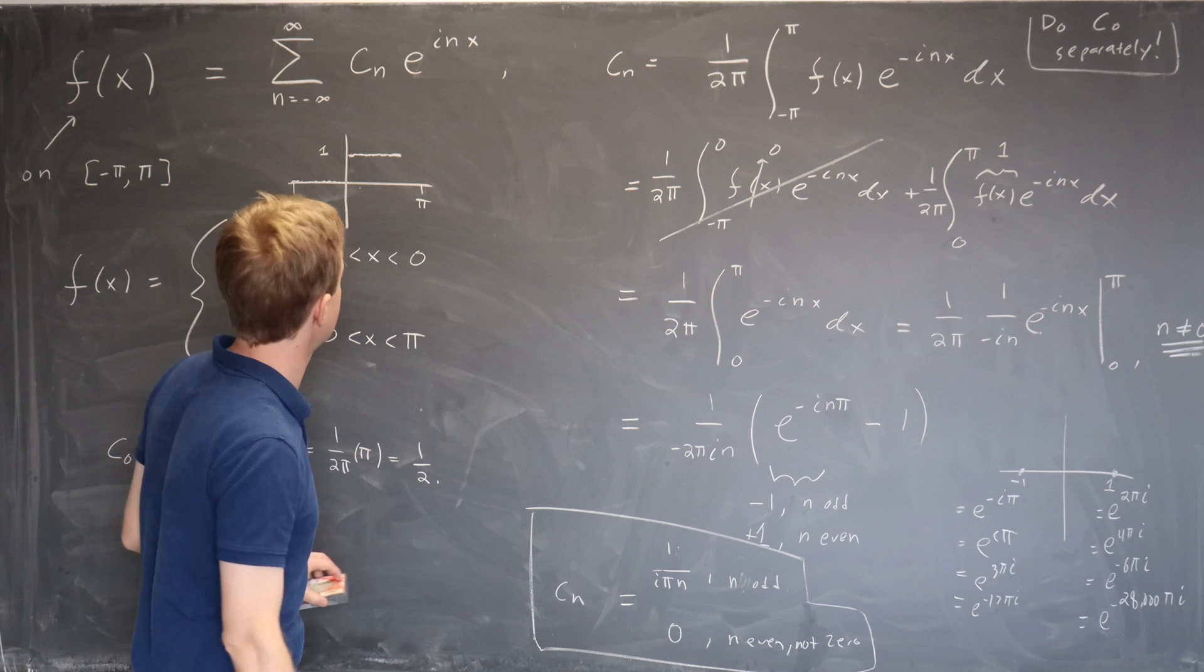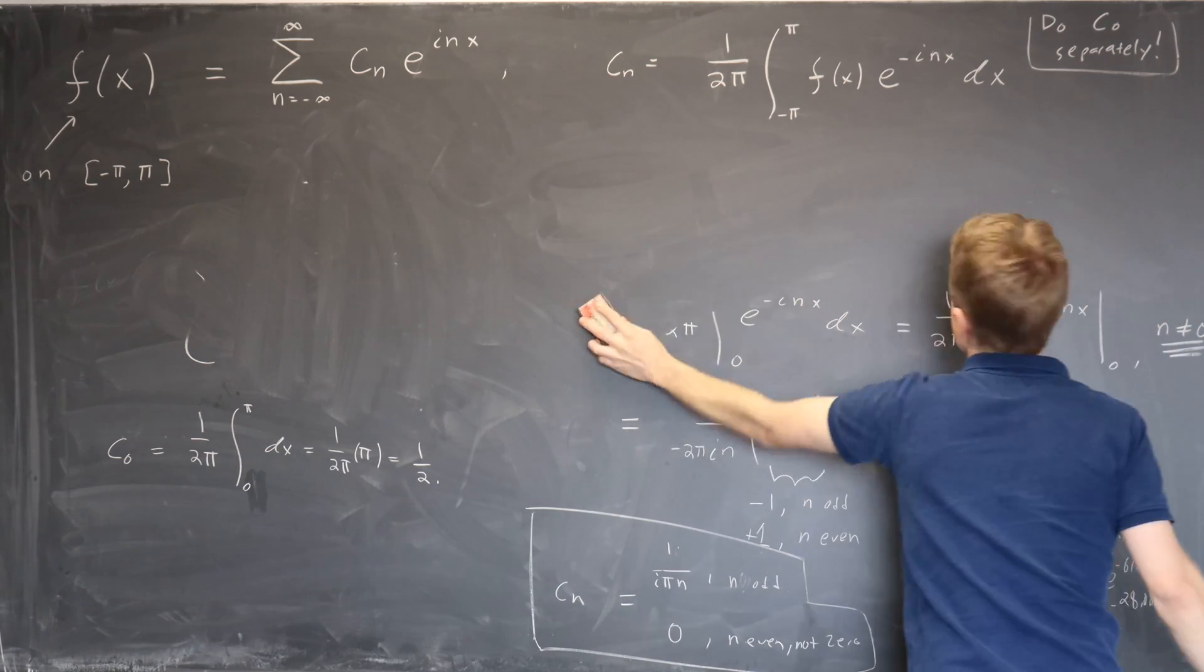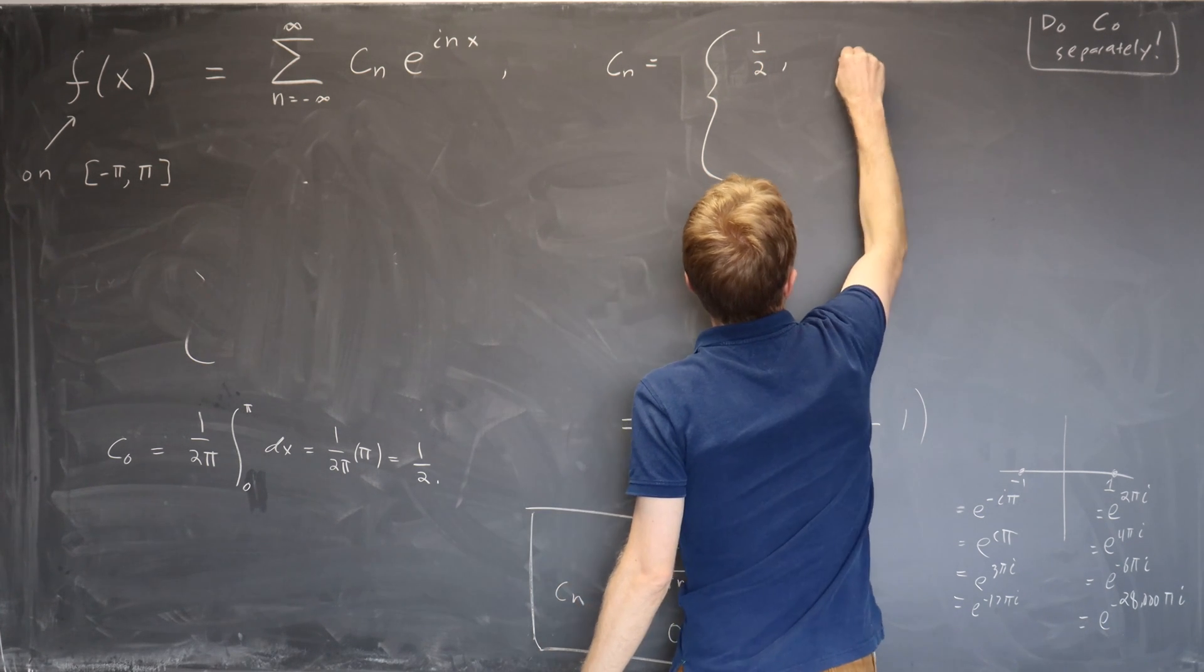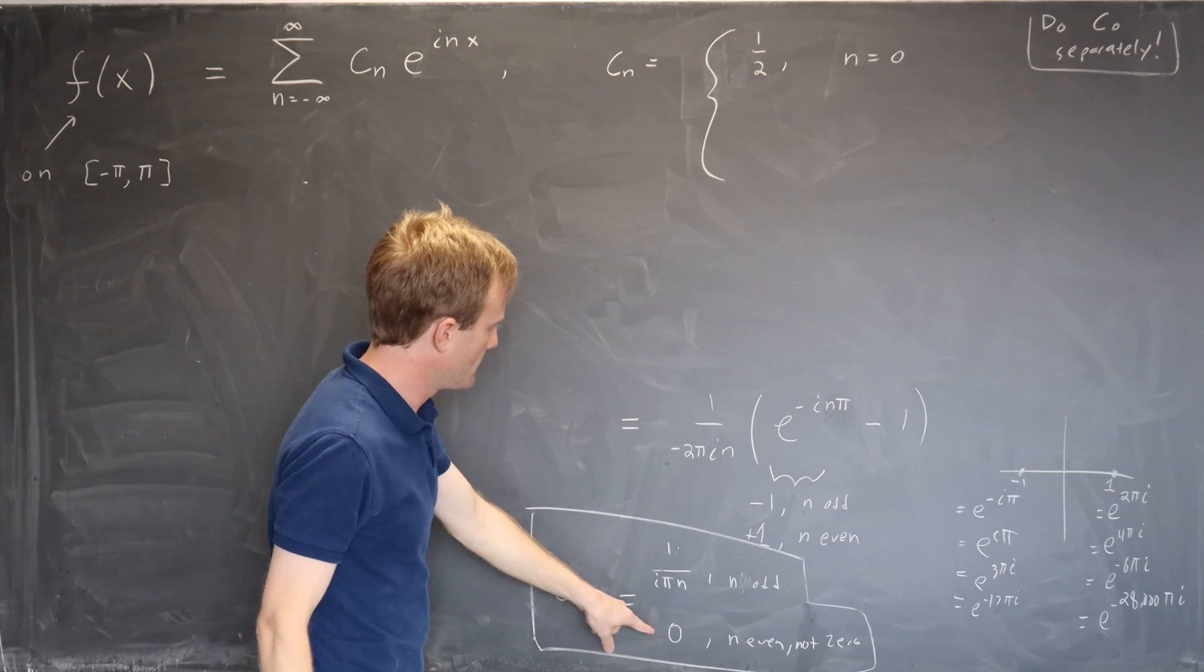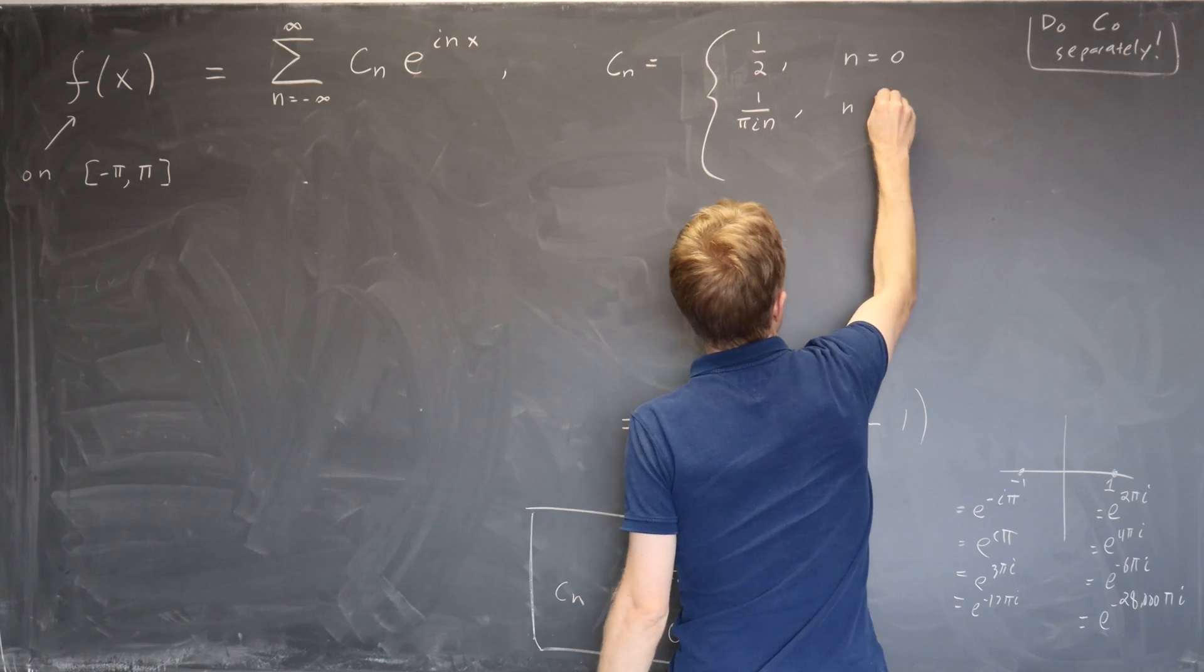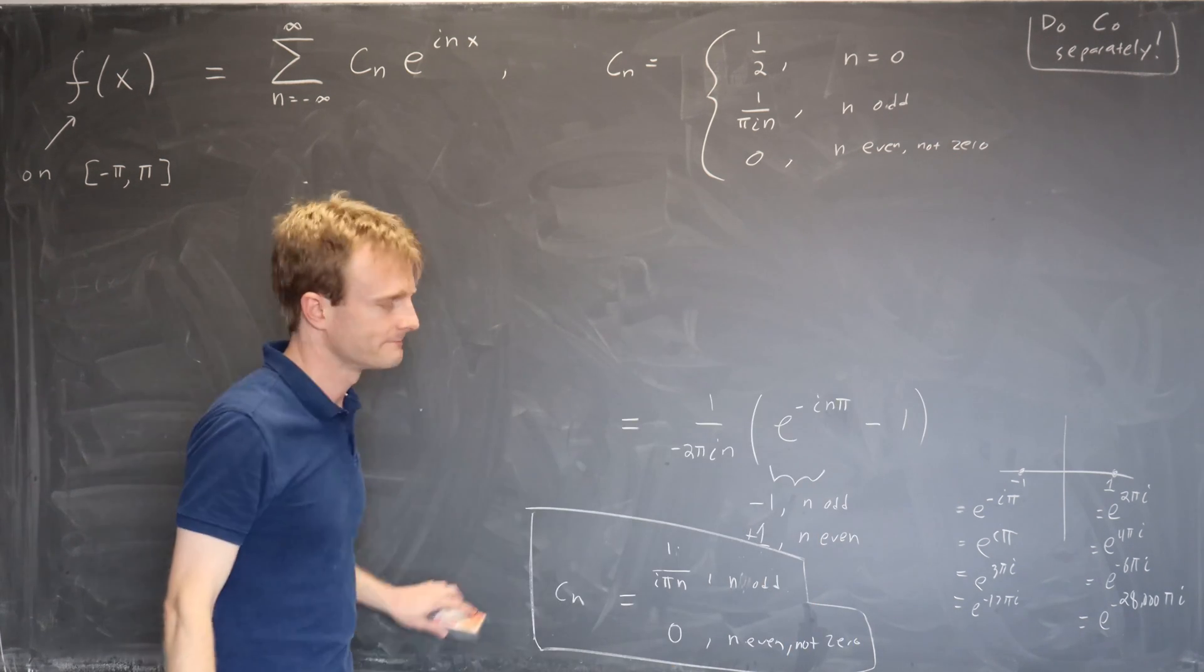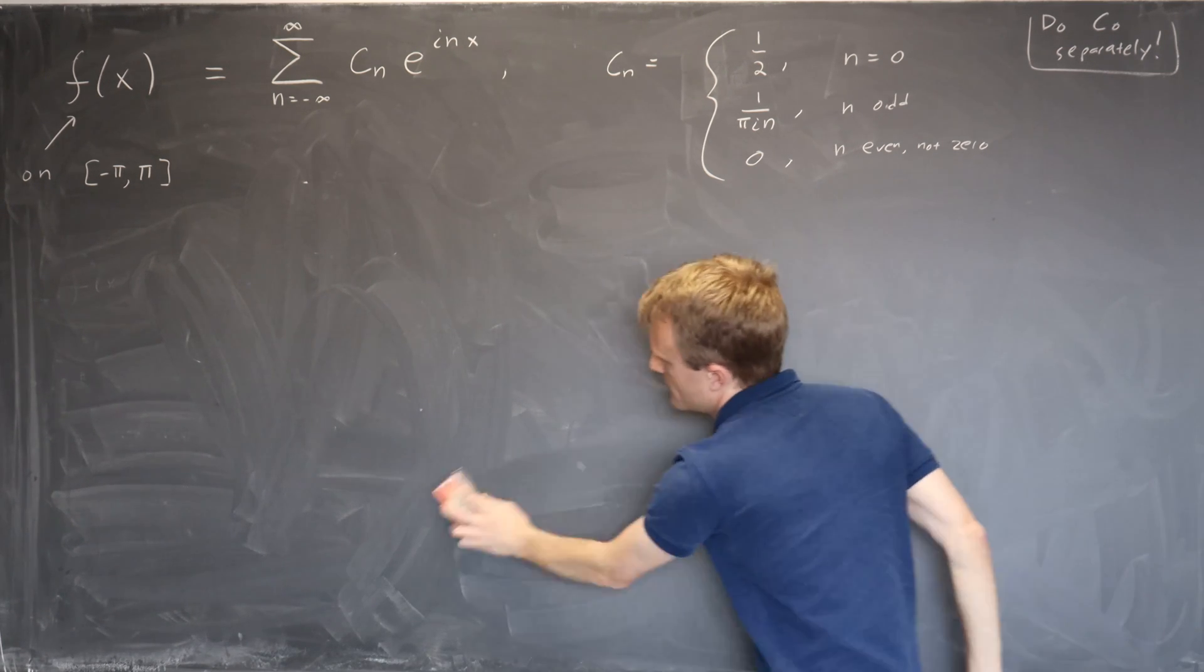So now what I will do is I'll erase everything we have except for the c_n. I'll copy the result for c_n over here. We found out that c_n was the following: it was 1 half if n equals 0, it was 1 over pi in when n is odd, and it was 0 when n is even and not 0. So step 1 is complete. That is the answer for the complex form of the Fourier series.